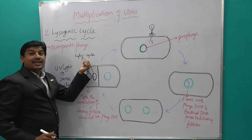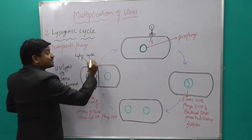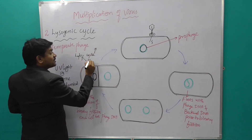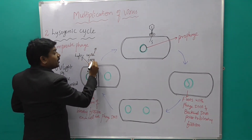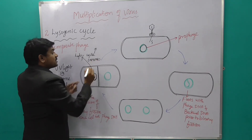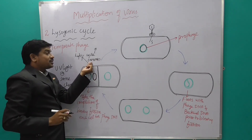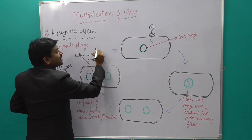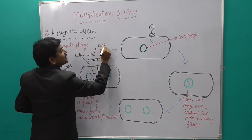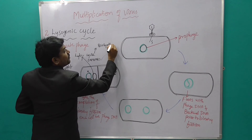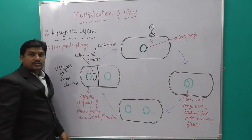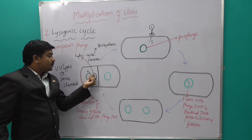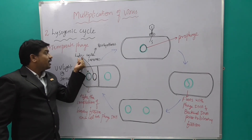The lytic cycle has stages: A means attachment, B means penetration, M means maturation, and R means release — known as ABMR. In the lysogenic cycle, when phage DNA enters the lytic cycle, it starts at the biosynthesis stage. This is a very important point to remember.